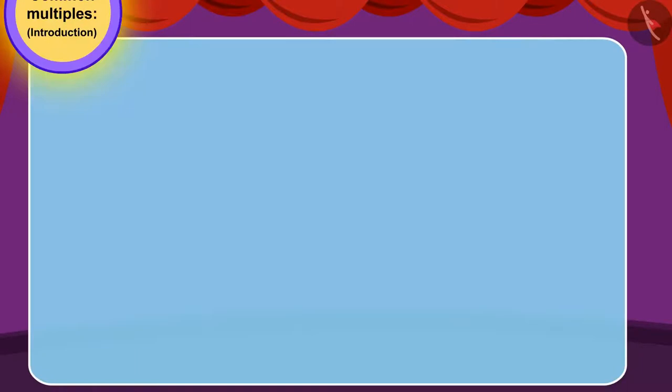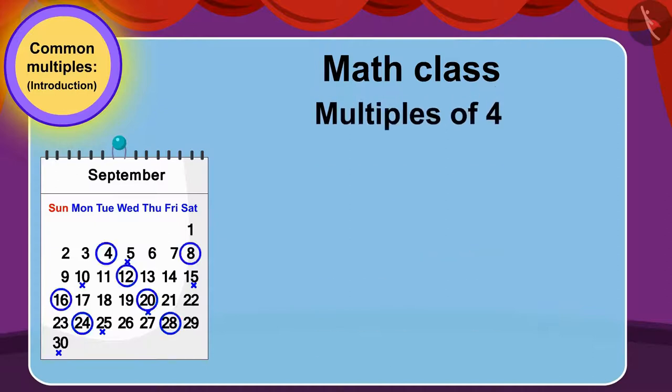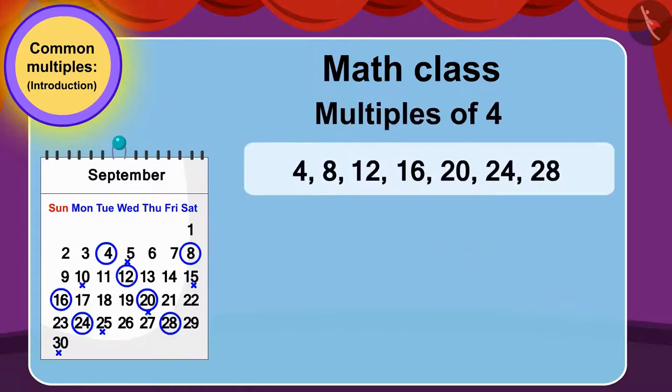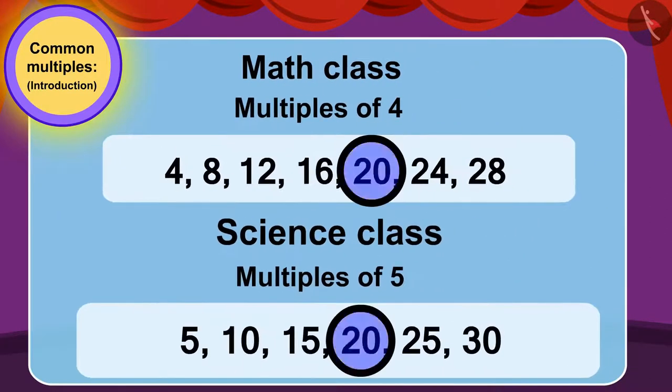Children, we can see that Bablu's math class dates are multiples of four and his science class dates are multiples of five, and twenty is a multiple of both numbers.